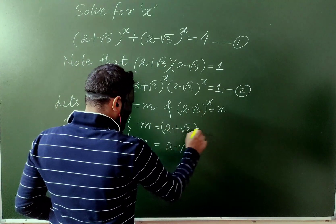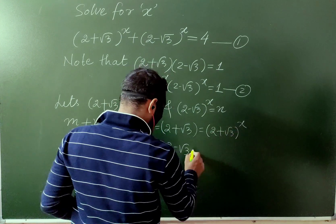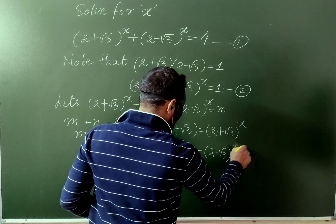It means this one equals 2 plus root 3 to the power x, and this one equals 2 minus root 3 to the power x.